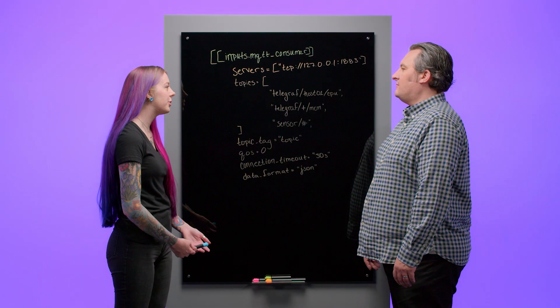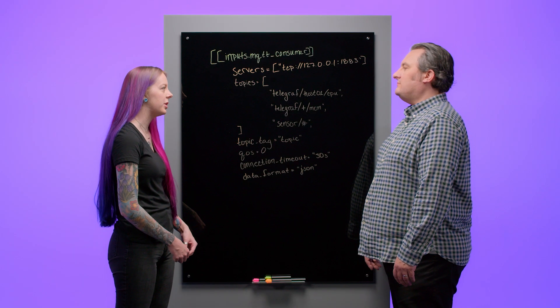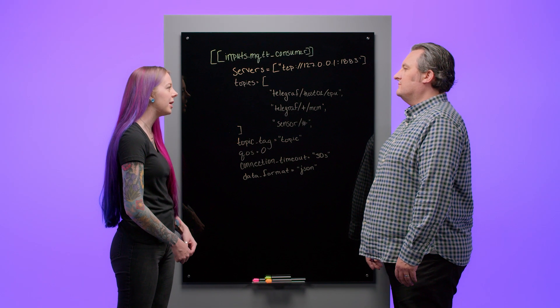So where can Telegraph grab data from? Telegraph can grab data from almost anywhere you can think of, including IoT devices, databases, and HTTP endpoints. Today we're going to talk about three of our most used plugins: MQTT, SNMP, and Postgres.